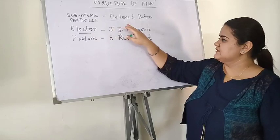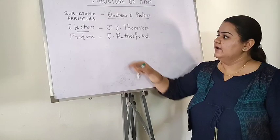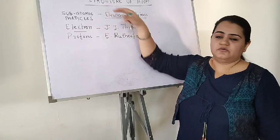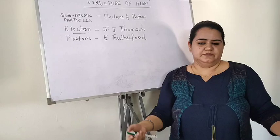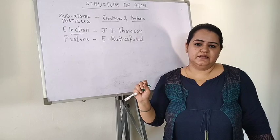So to recap: electron was discovered by J.J. Thomson, and proton was discovered by Rutherford. When scientists came to know that the atom can be divided and that electrons and protons are present in it, they were curious to know the structure of the atom — how these electrons and protons are arranged. There are many models describing this, but we are going to discuss the first ever model given by J.J. Thomson.